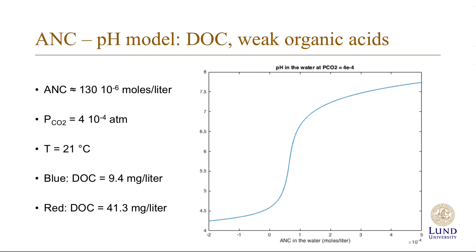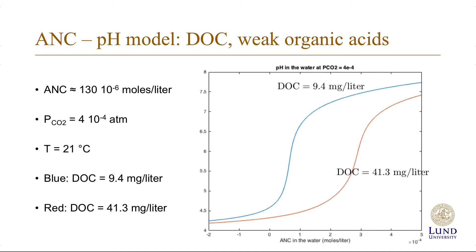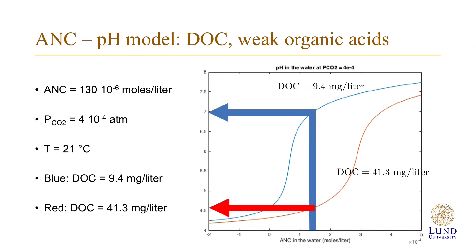The weak organic acids associated with DOC have a very large impact. In the stream in the beech forest, the DOC was 9.4 mg per liter and this is the corresponding curve. However, if the DOC had been at the level of the stream at Dalby Söderskog — a much higher value — the model predicted pH of about 7 in the first case, but if the DOC were four times as high, which is not unrealistic, we would have had a pH of about 4.5. This means that a low pH could be created not just by a low ANC, but also by high DOC values or a high pCO₂ value.